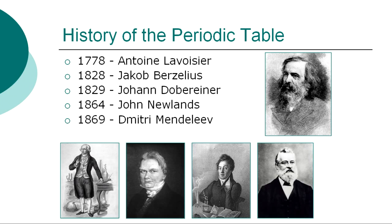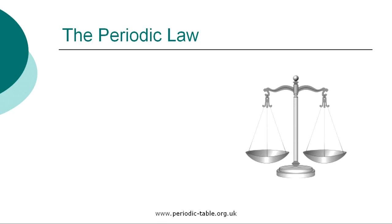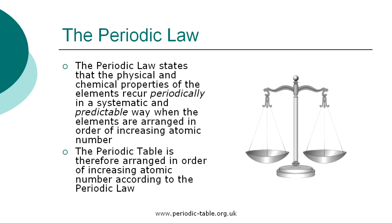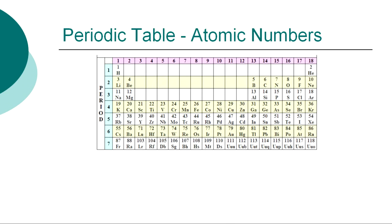Dmitry Mendeleev proposed the first Periodic Law. In 1913, Henry Mosley determined the atomic number of each of the elements and modified the Periodic Law. The Periodic Law states that the physical and chemical properties of the elements recur periodically in a systematic and predictable way when the elements are arranged in order of increasing atomic number. The Periodic Table is therefore arranged in order of increasing atomic numbers. When arranged according to atomic number, elements show repeating or periodic trends in their chemical and physical properties.